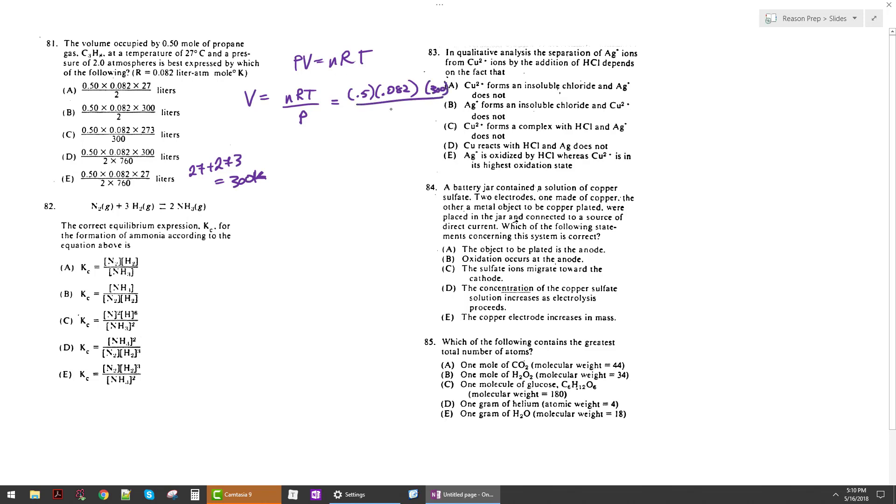And then my pressure is 2. And one thing just to double check before you pick an answer is just verify that your units are good. Notice R has units of liter, atmospheric, mole, Kelvin, and that's what I have for all of these. I've got my moles, I've got my Kelvin, I've got my atmospheres, and I'm going to get liters. So everything is good with my units. So I look for the choice that matches this, and it looks like it would be B. Yeah, so we get B.